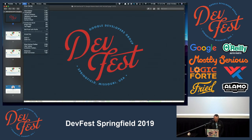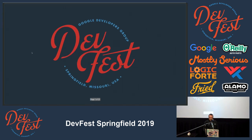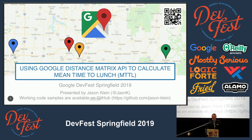My name is Jason Klein, I'm with Logic Forte. Today we're going to be talking about using the Google Distance Matrix API to calculate the mean time to lunch, which is an appropriate lunch talk since we're probably all wondering how many minutes it's going to take to get our lunch. We're also going to talk about Google Maps APIs and things like that, so hopefully this will apply to a lot of folks involved in web content and web front-end.